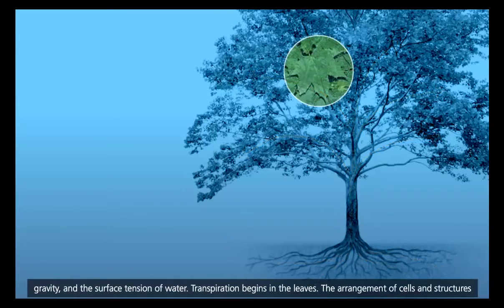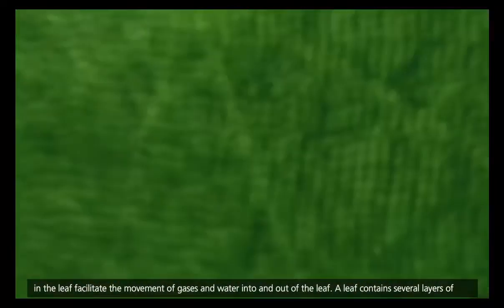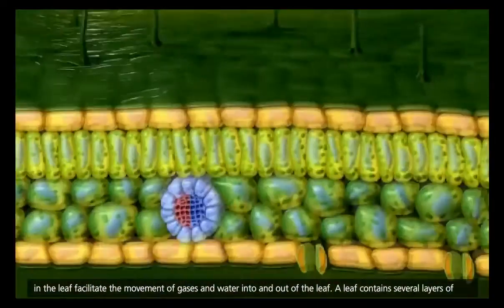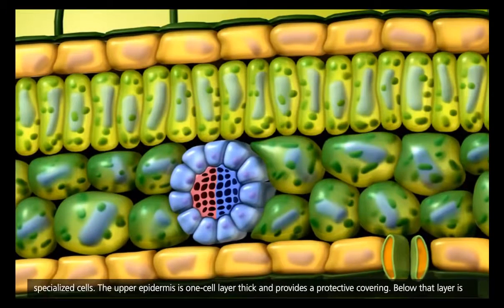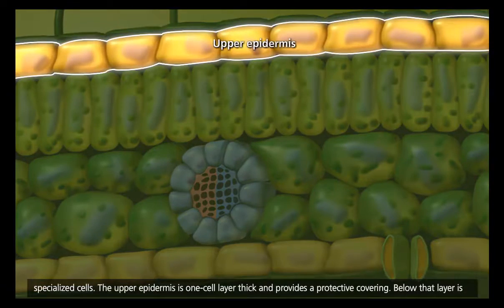Transpiration begins in the leaves. The arrangement of cells and structures in the leaf facilitate the movement of gases and water into and out of the leaf. A leaf contains several layers of specialized cells. The upper epidermis is one cell layer thick and provides a protective covering.